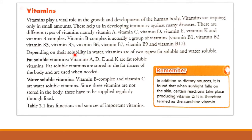Depending on their solubility in water, vitamins are of two types: fat-soluble and water-soluble. Vitamins A, D, E and K are fat-soluble vitamins. Fat-soluble vitamins are stored in the fat tissue of the body and are used when needed.